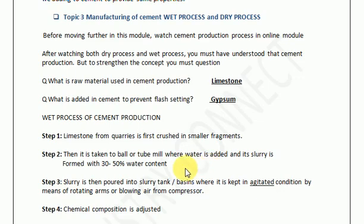The second step: in the cement production plant there is a ball or tube mill where water is added to the small fragmented limestone and a slurry is formed with 30 to 50 percent water content. This slurry is then poured into a slurry tank and basins where it is kept in agitated conditions by means of rotating arms or blowing air from a compressor.